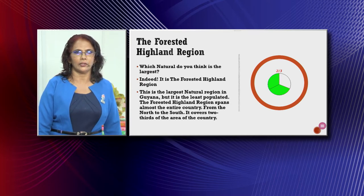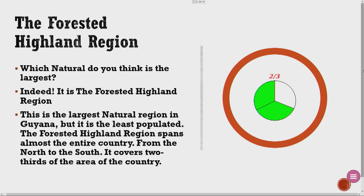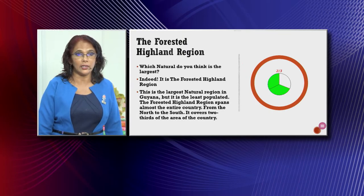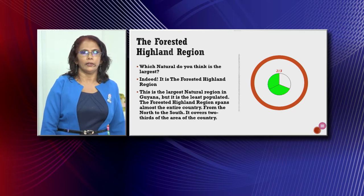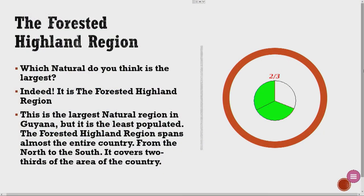Which natural region do you think is the largest? Indeed, it is the forested highland region. This is the largest natural region in Guyana, but it is the least populated. The forested highland region spans almost the entire country from north to south. It covers two-thirds of the area of the country. We have a pie chart divided into three parts — two parts are shaded green, representing the two-thirds that is the forested highland region.